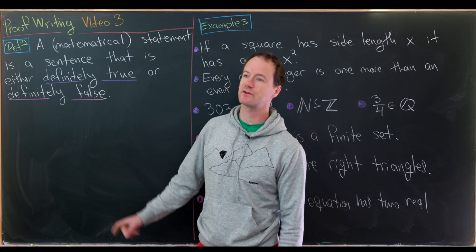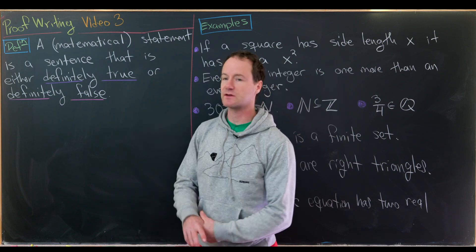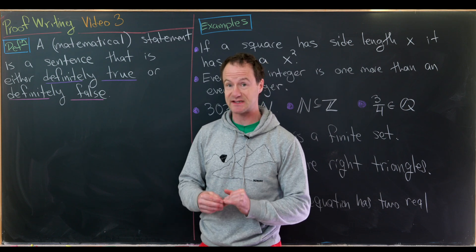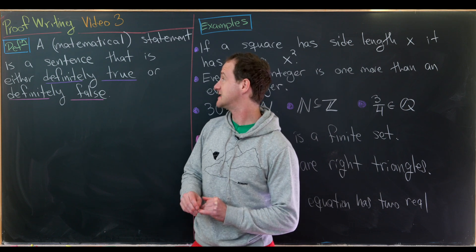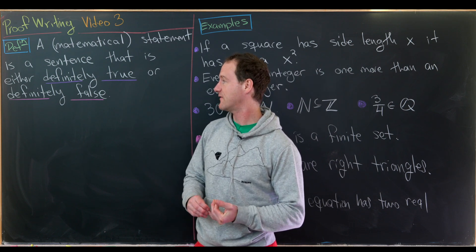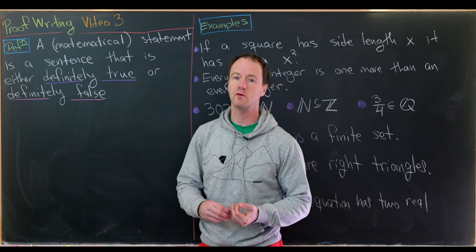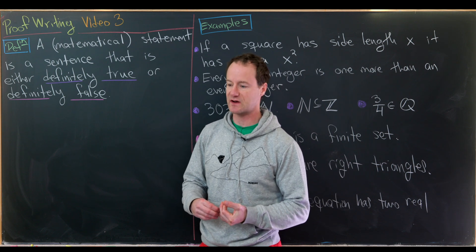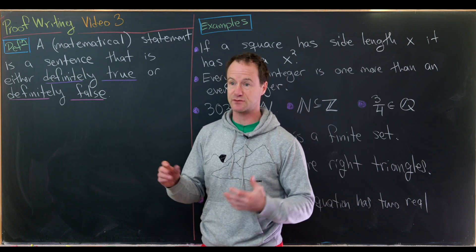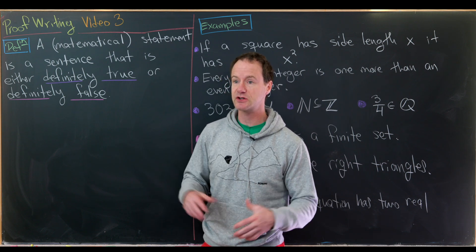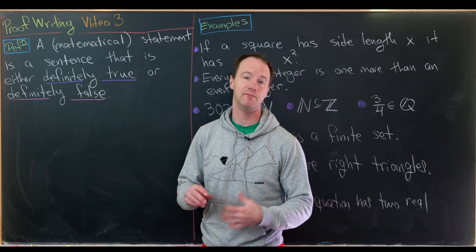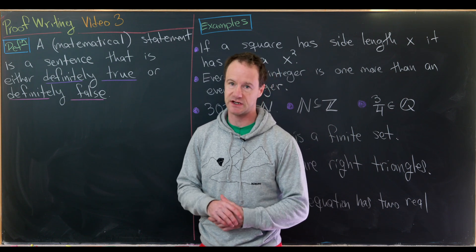Let's look at a definition first. A mathematical statement, or sometimes just a statement, is a sentence that is either definitely true or definitely false. This can be a sentence written in English or it can be a sentence written in mathematical notation.